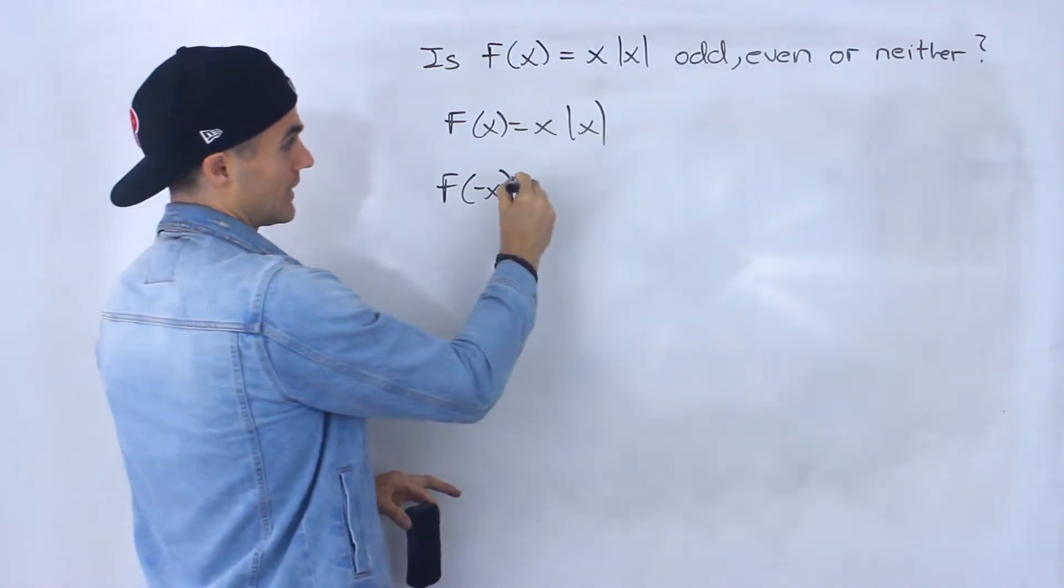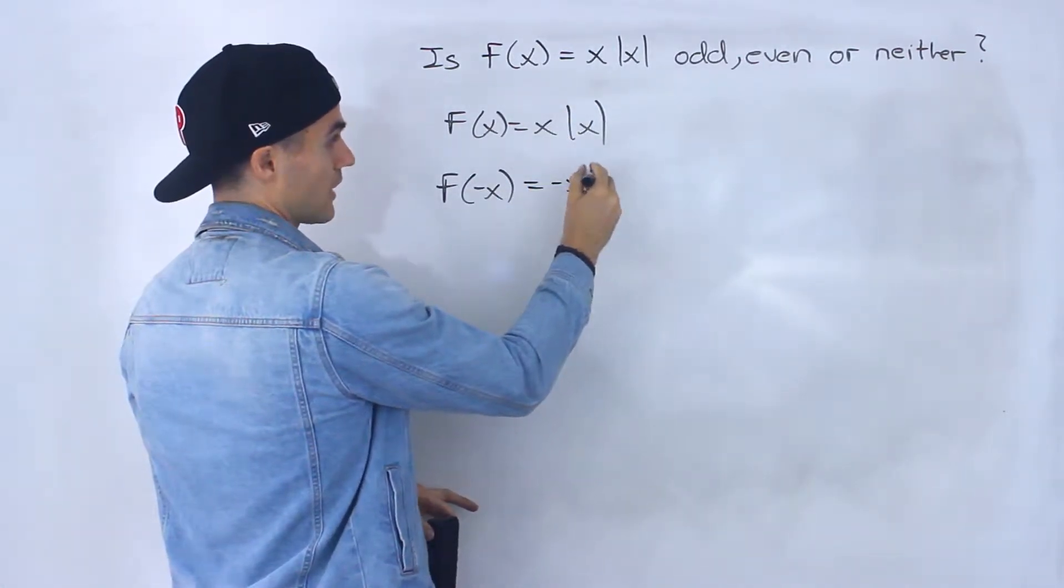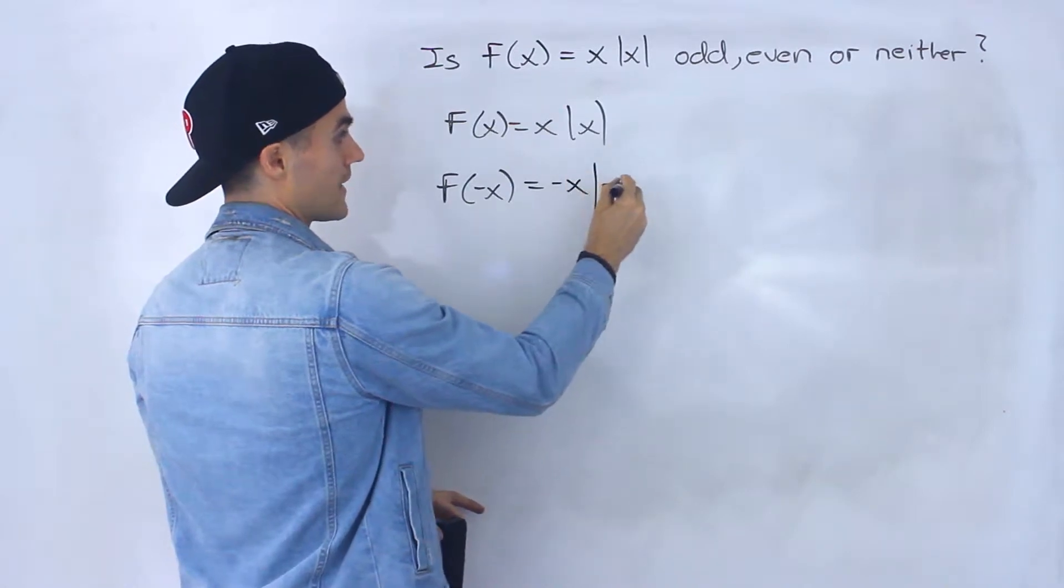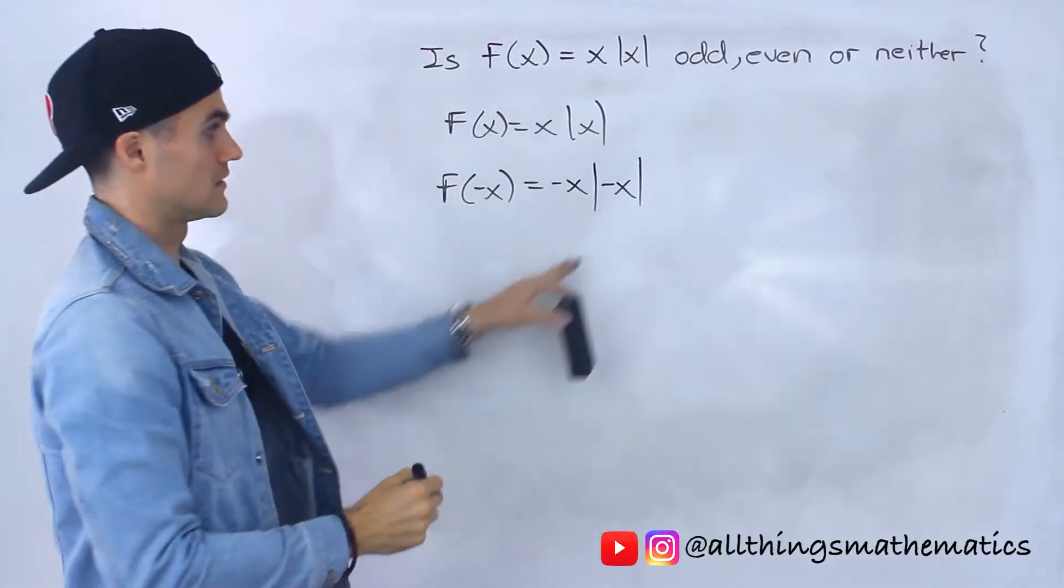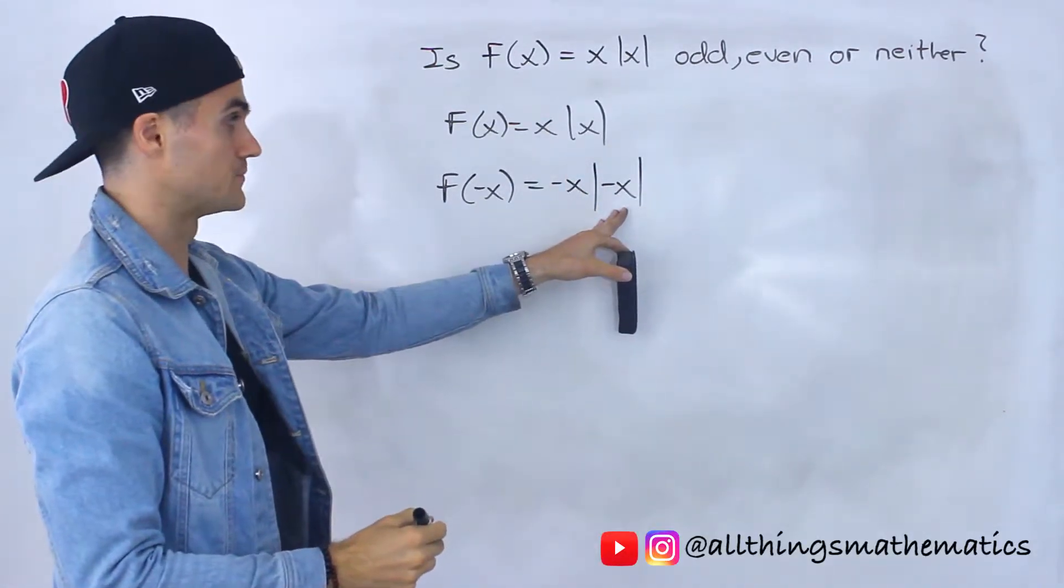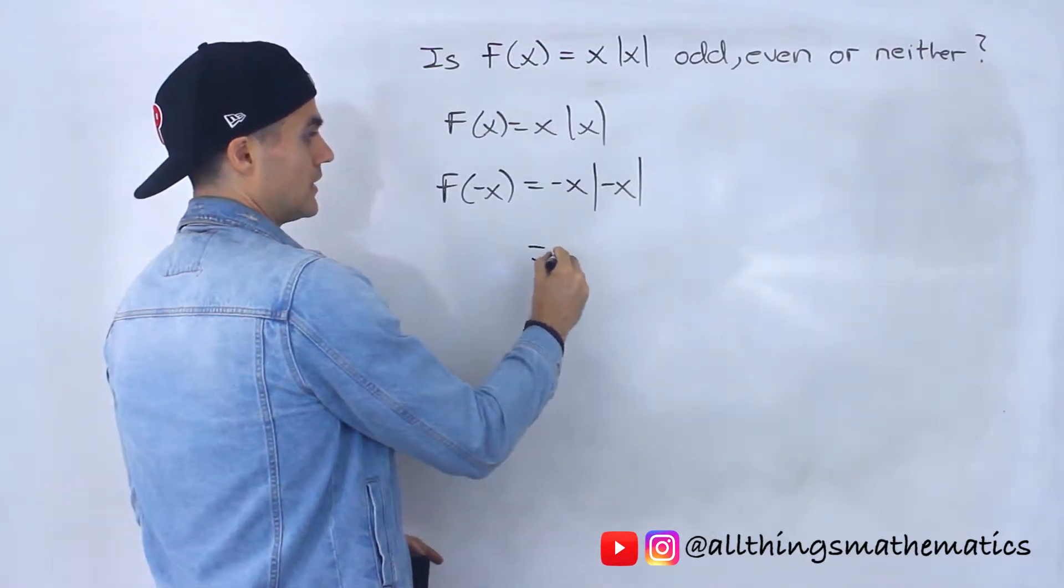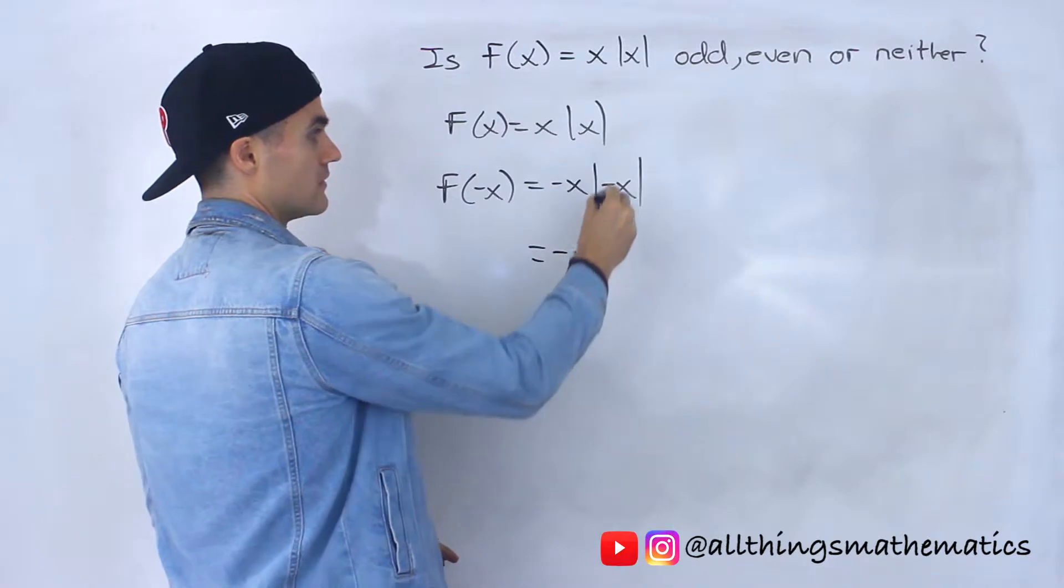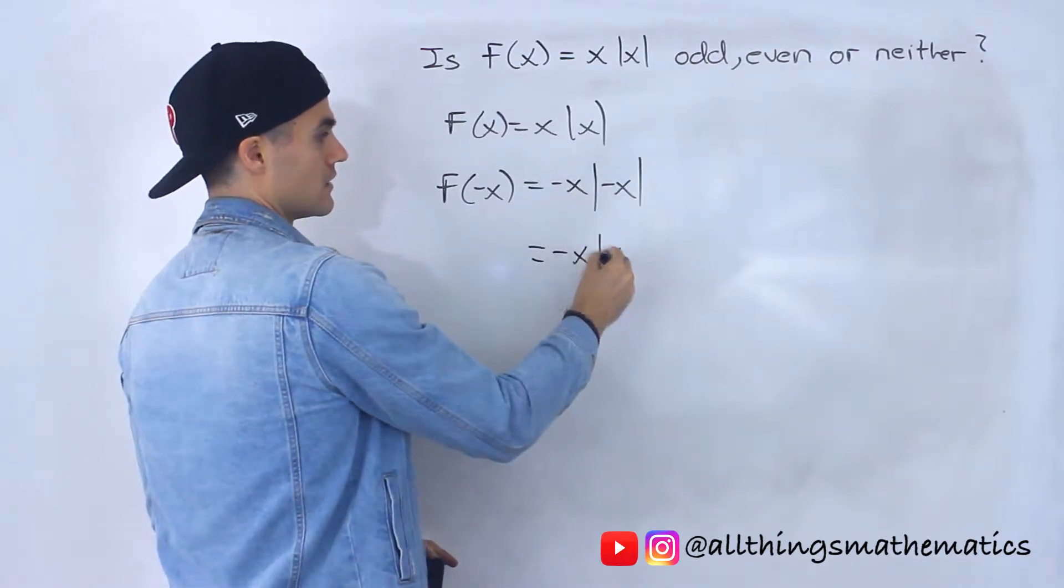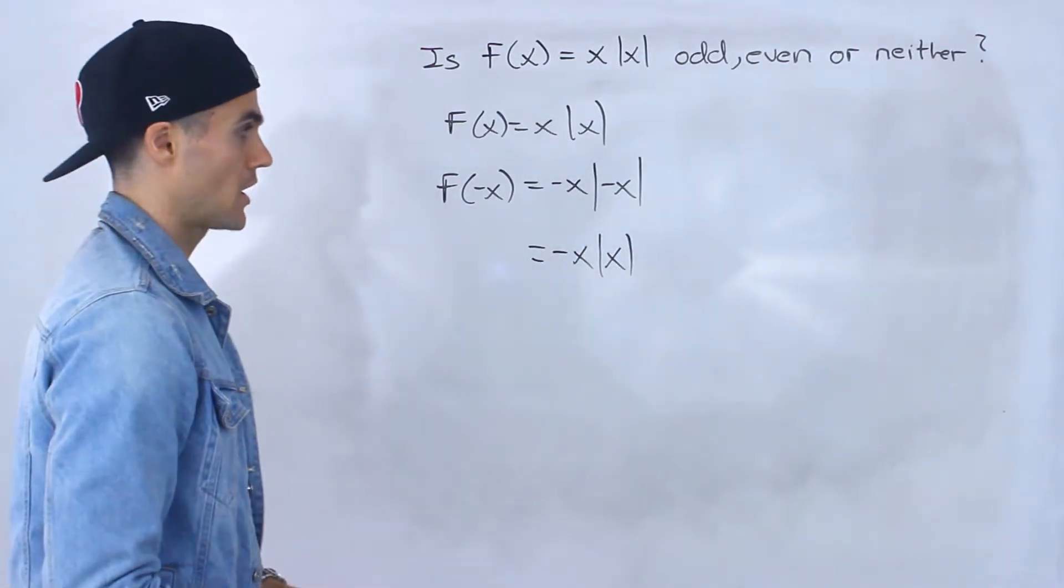So if we plug in negative x for all these x's we'll have negative x out here and then negative x within this absolute value. However, we know that any negative is just gonna turn to a positive.